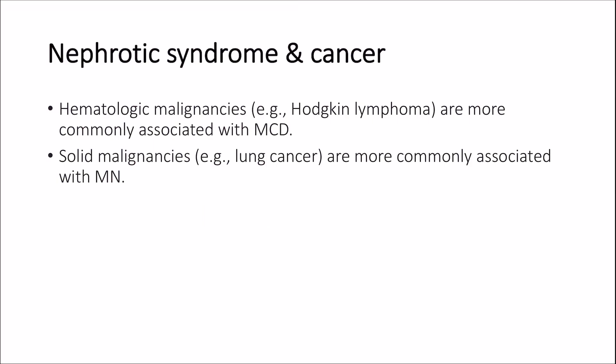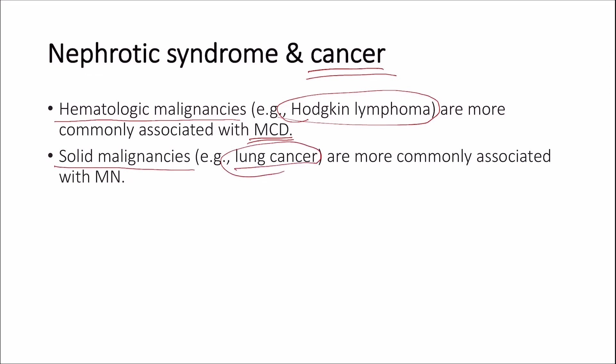We'll dedicate the last couple of slides to some common tips and tricks in solving cases regarding glomerulopathies. Nephrotic syndrome is sometimes associated with cancer. Malignancies of the blood such as Hodgkin's lymphoma are more commonly associated with minimal change disease, while solid malignancies such as lung cancer are more commonly associated with membranous nephropathy.